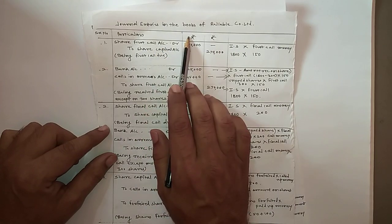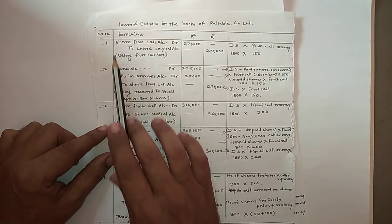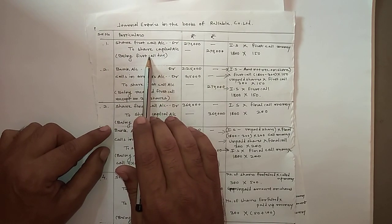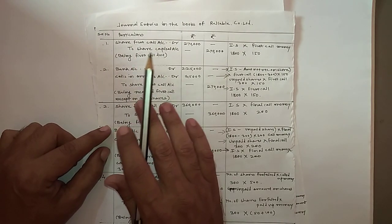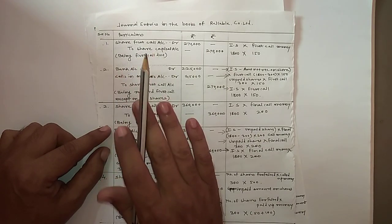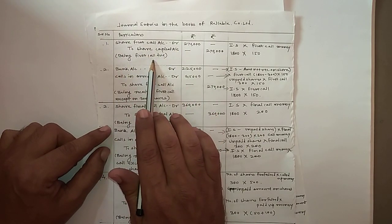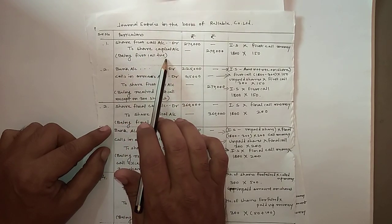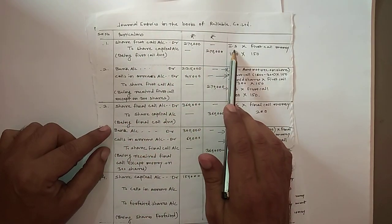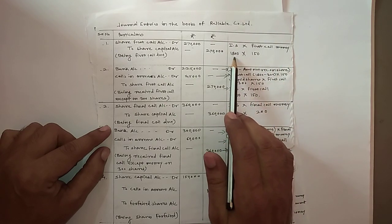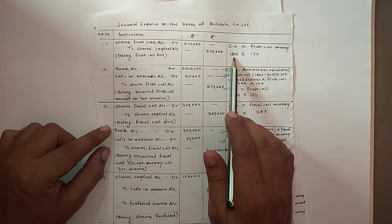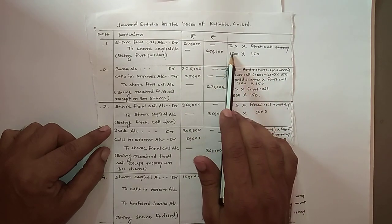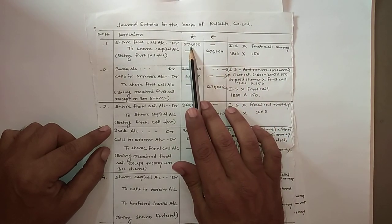Journal entries in the books of Reliable Company Limited. Entry number one is the first call due entry. Share First Call Account debit, to Share Capital Account — being first call due. The amount is calculated as issued shares multiplied by first call money: 1800 shares into rupees 150, giving rupees 2,70,000.